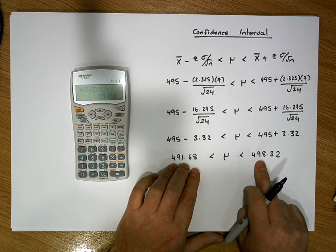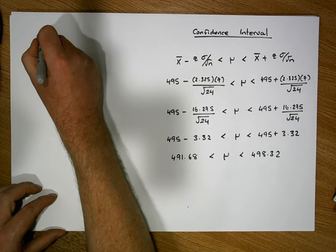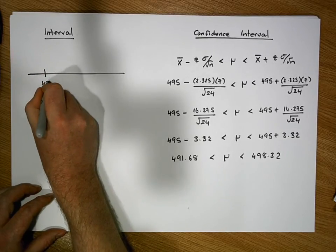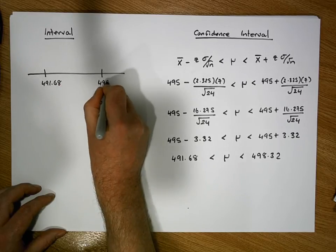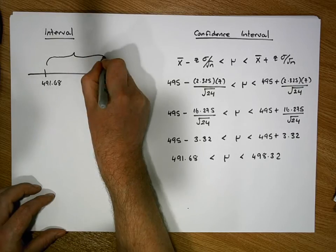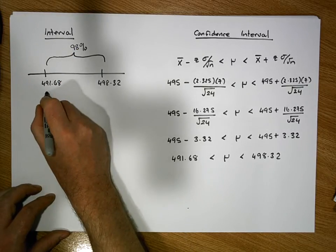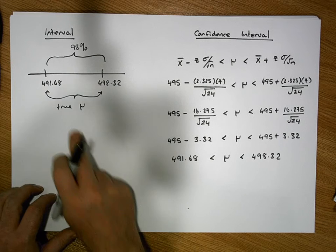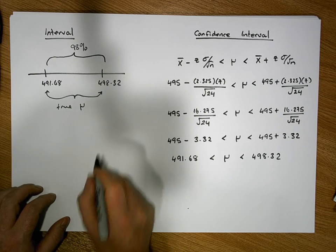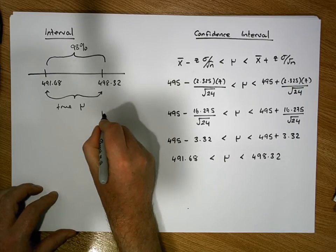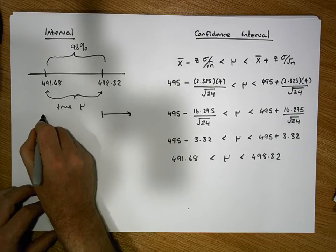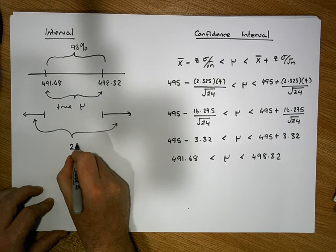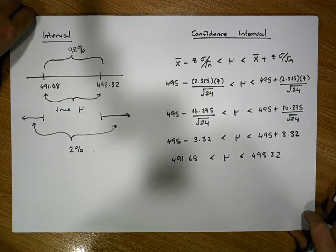We are 98% confident that the true population mean is greater than 491.68 mils and less than 498.32 mils. The lower bound is 491.68 and the upper bound is 498.32, and we're 98% confident that the true population mean will reside between those two values. But we might be wrong — it is still possible that the true population mean is outside these values, but that should only occur approximately 2% of the time.